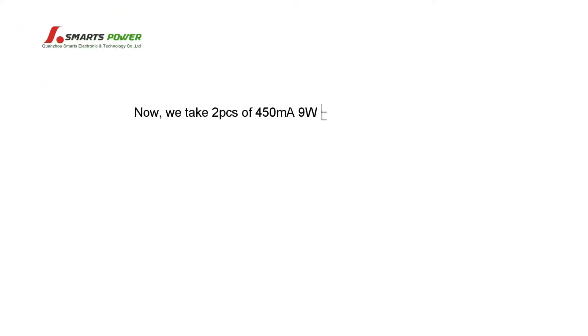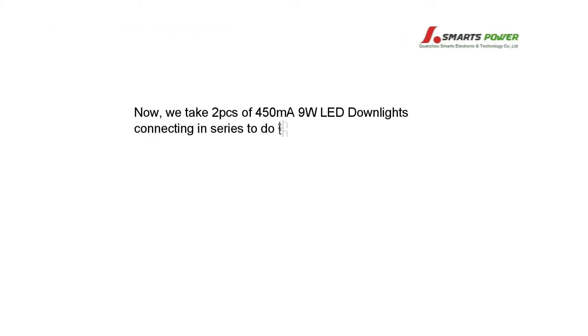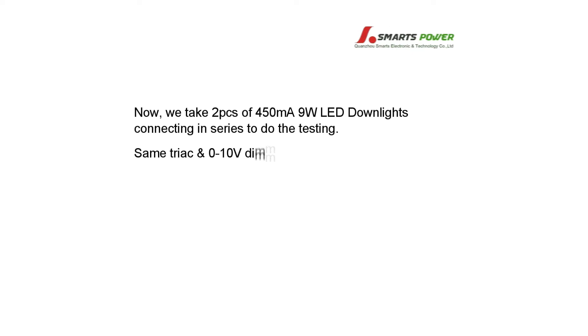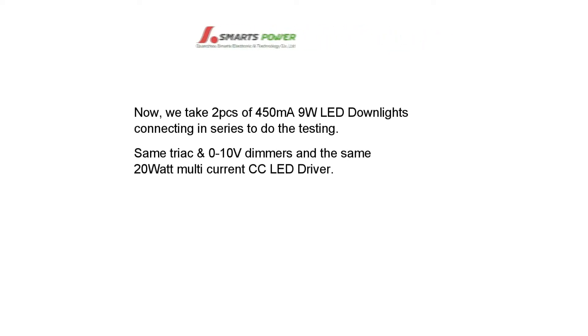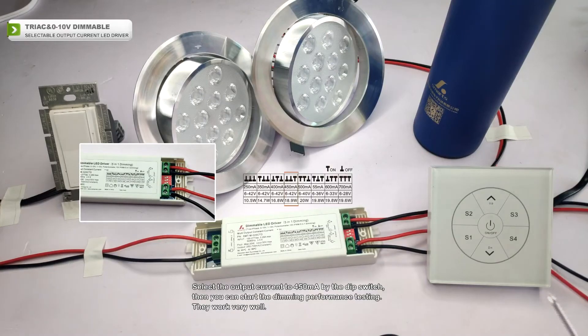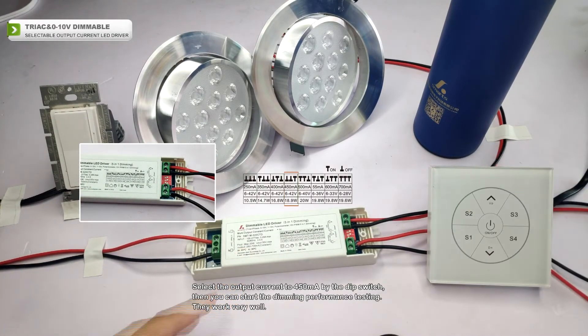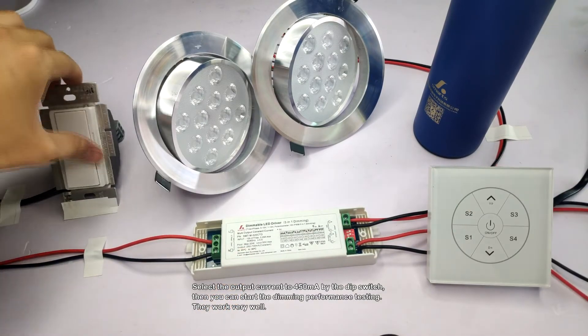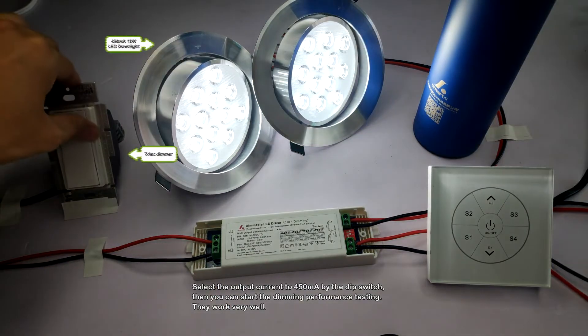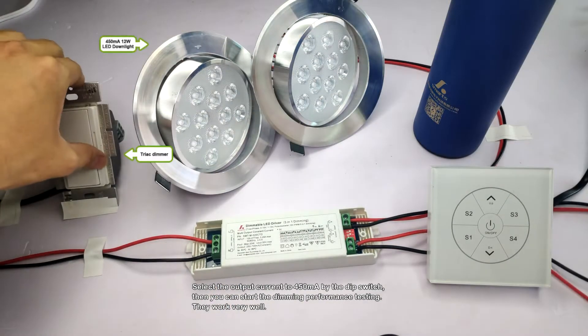Now we take two pieces of 450 mA 9 watt LED downlights connected in series to do the testing, using the same track and 0 to 10 volt dimmers and the same 20 watt multi-current constant current LED driver. Select the output current to 450 mA by the dip switch, then start the dimming performance testing.